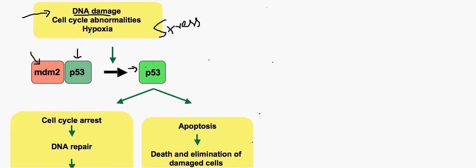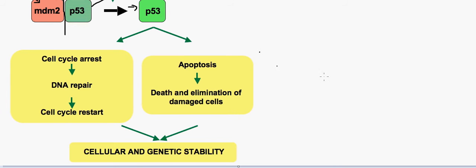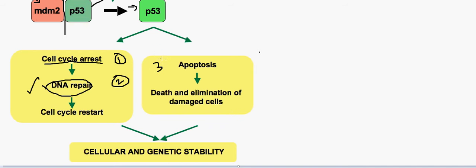MDM2 is a normal protein which is always attached to inactivated p53. Whenever the cell senses stress, p53 is released from MDM2 — they get detached — and p53 becomes activated. As discussed, p53 has several mechanisms: cell cycle arrest gives time for DNA repair, and if DNA repair is successful the cell cycle restarts for cell division. The other mechanisms are temporary and permanent cell cycle arrest, and the third is apoptosis — death and elimination of damaged cells when DNA repair cannot occur.